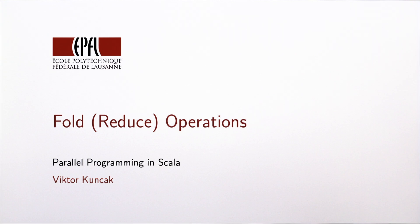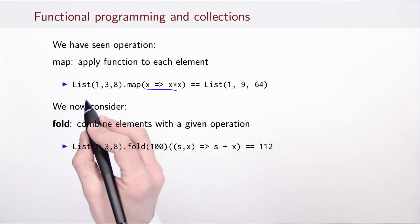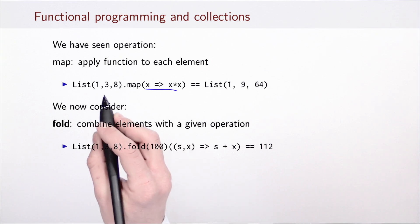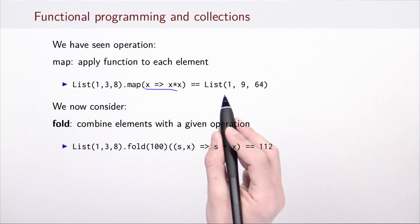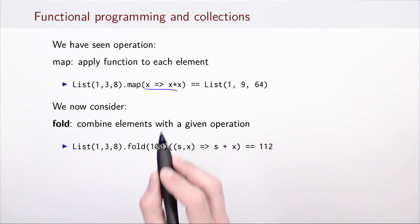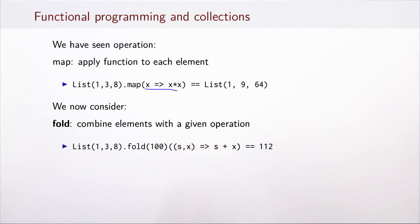Now we look at operations often called fold or reduce. We have previously seen the map operation, which applies a given function to every element of a collection. For example, given a list 1, 3, 8, map would produce the list 1, 9, 64 when the mapping function is the squaring function.